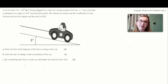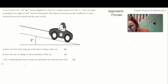All right, so here is the third and final question we're going to be looking at today. So we're told a car of mass 1 times 10 to the 3 kilograms is being dragged by a wire at a constant speed of 18 meters per second up a road that is inclined at an angle of 8 degrees from the horizontal. The wheels are locked and the coefficient of static friction between the wheels and the road is 0.23. So first we're asked to draw a free body diagram of the forces acting on the car. So if we want to draw a free body diagram in a question, that's probably quite a good hint that the best approach you take to this question is going to be to think about forces. So the approach we're going to take here is to consider the forces acting on the car.